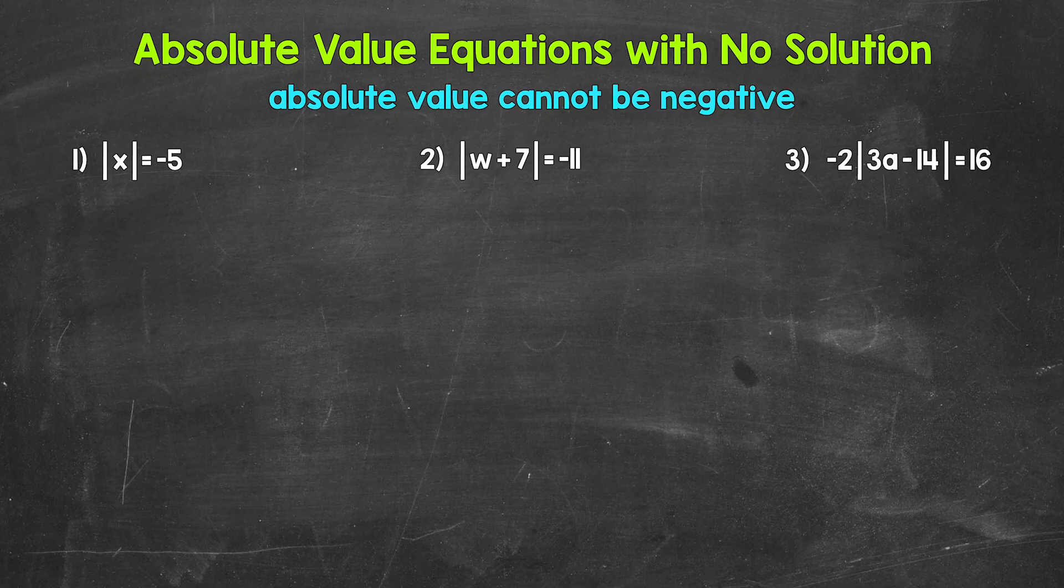Now remember, absolute value is the distance from zero. The absolute value of something, whether it's a number or an expression, cannot be negative, it cannot equal a negative. The absolute value of something is always going to be positive or zero, so keep that in mind.